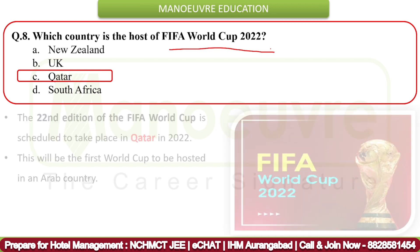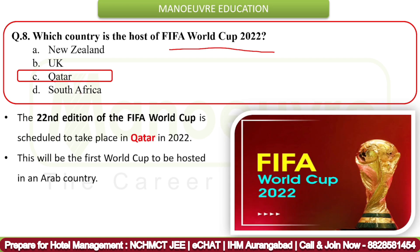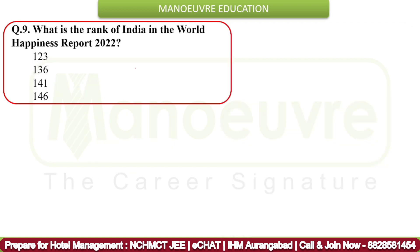Next question: Which country is the host of FIFA World Cup 2022? The correct answer is Qatar. This 22nd edition of the FIFA World Cup is scheduled to take place in Qatar in 2022. This will be the first World Cup to be hosted in an Arab country. The correct answer is option C — Qatar.